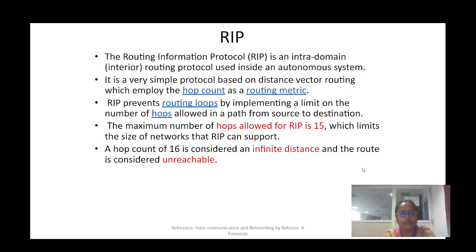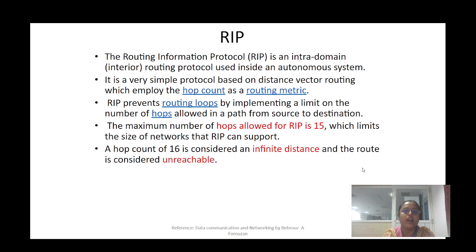RIP (Routing Information Protocol) is an example of distance vector routing. It is used in intra-domain routing within an autonomous system. RIP is a simple protocol that uses hop count as a routing metric. It prevents loops because the maximum number of hops allowed is 15, which also limits the size of the network. A hop count of 16 is considered infinite distance and is treated as unreachable.